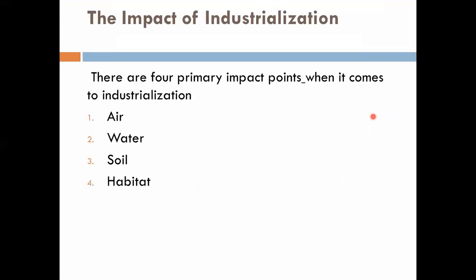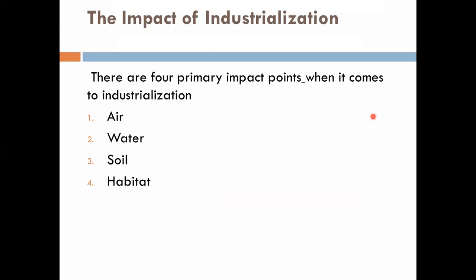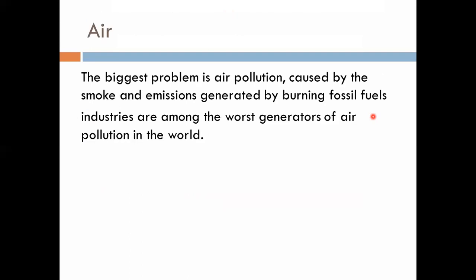Industrialization has had a lot of impacts — it has affected the air, water, soil, and habitat. These are the main impacts. If we talk about air pollution, air pollution is the number one problem due to industry effects. Industries involve the burning of fossil fuels, which is the main issue, and the smoke generated by industries is released into the air, causing air pollution.